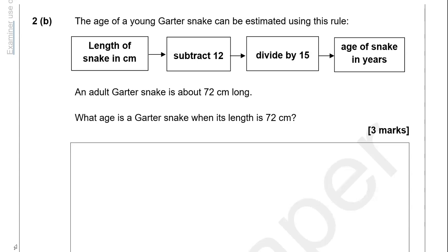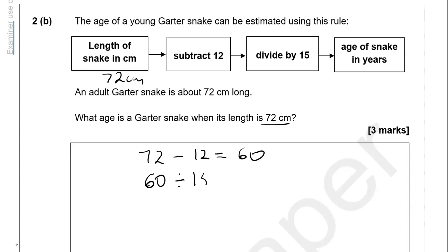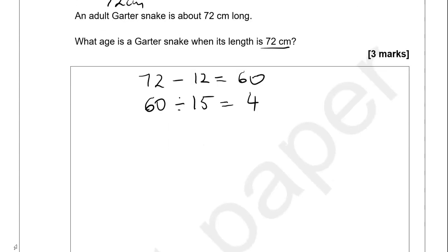What age is a garter snake when its length is 72 centimetres? So the length is 72 centimetres. We need to subtract 12 from it: 72 take away 12 gives us 60. Then divide 60 by 15, which gives us 4. That's the age of the snake in years — so 4 years.